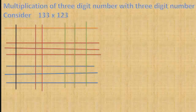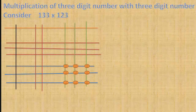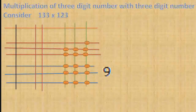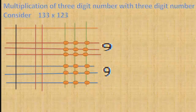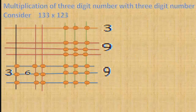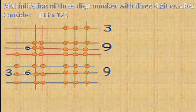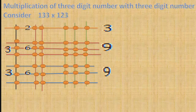Then count the points of intersections in each region. The regions give: 9, write 9. Then 9, write 9. Then 3, write 3. Then 6, write 6. Then 3, write 3. Then 6, write 6. Then 3, write 3. Then 2, write 2, and 1.